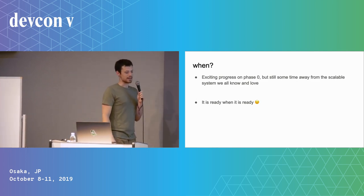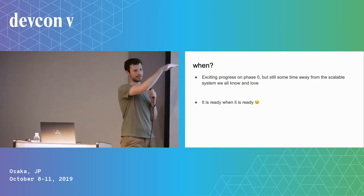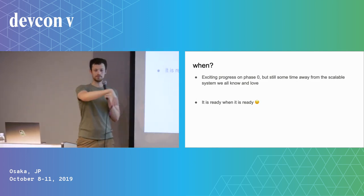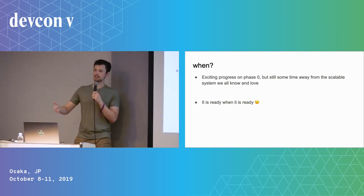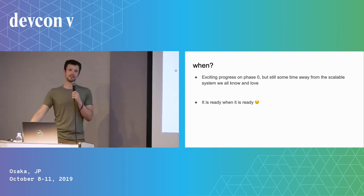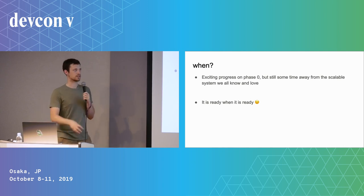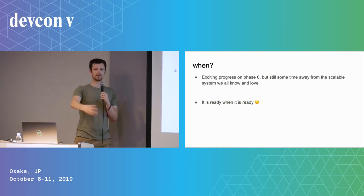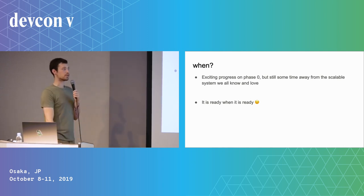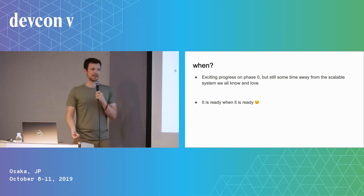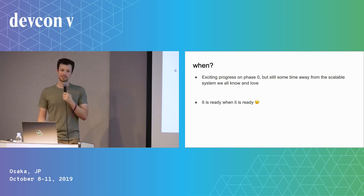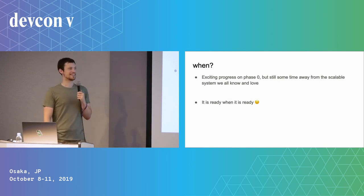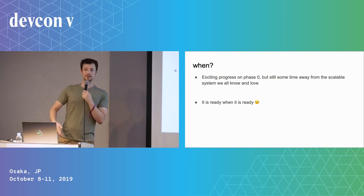Ultimately in phase two we'll have all the fun dApps we know and love on these shard chains, hopefully with much greater scalability. The system is broken out into phases — phase zero, phase one, phase two — because it's so complicated that it's easier to get right by having discrete chunks we can deploy one at a time.